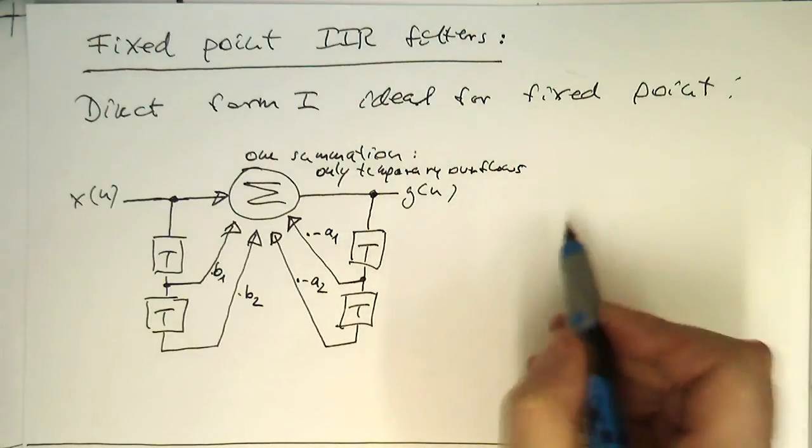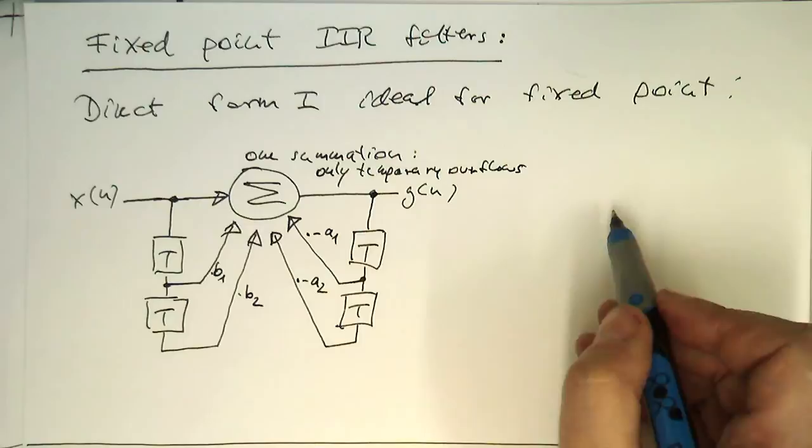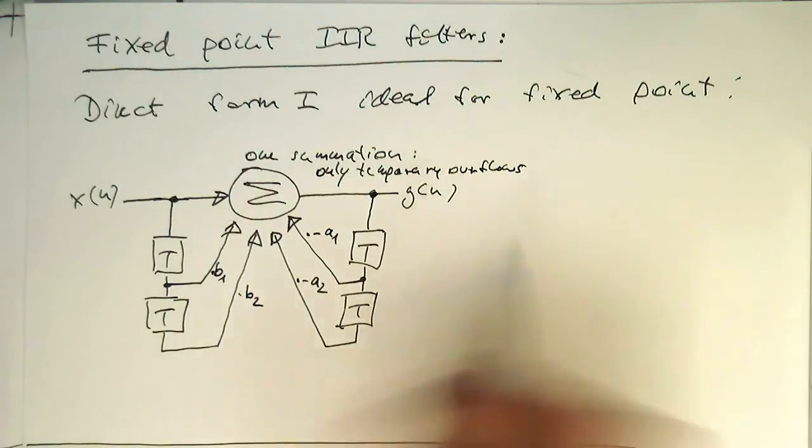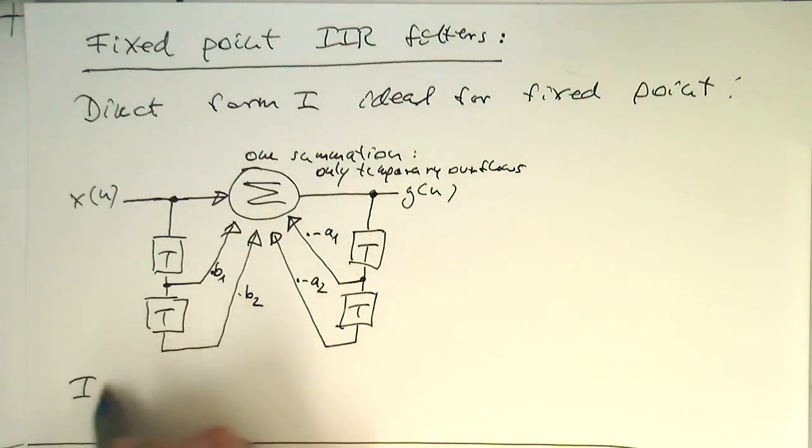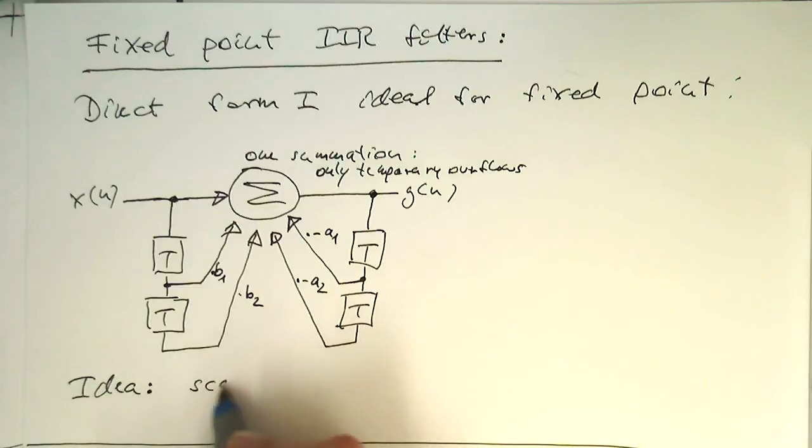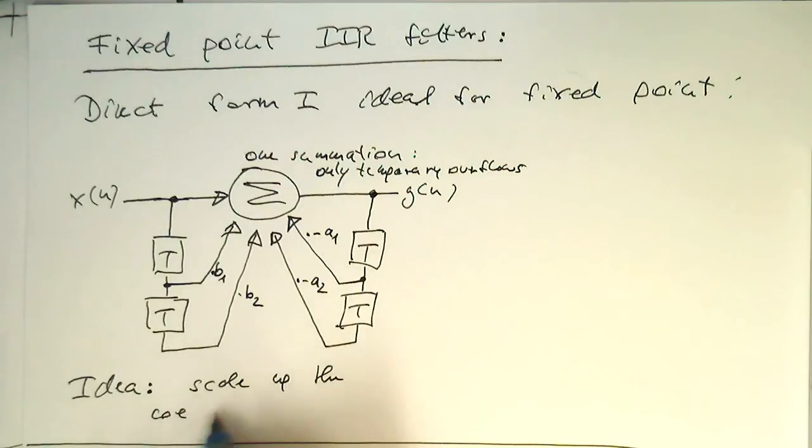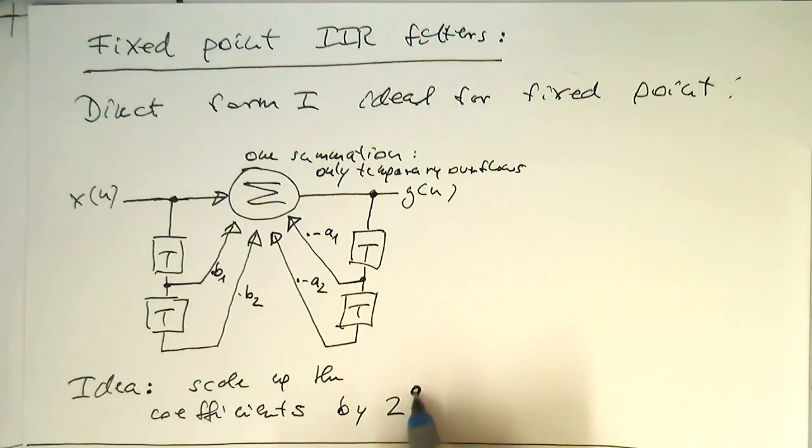So how does it look when we're using fixed point arithmetic here? The idea behind this is just to scale up the coefficients by, let's call this 2 to the power 2q. We're using the power of 2 because of the shifting ability, so division by this is easy to do.